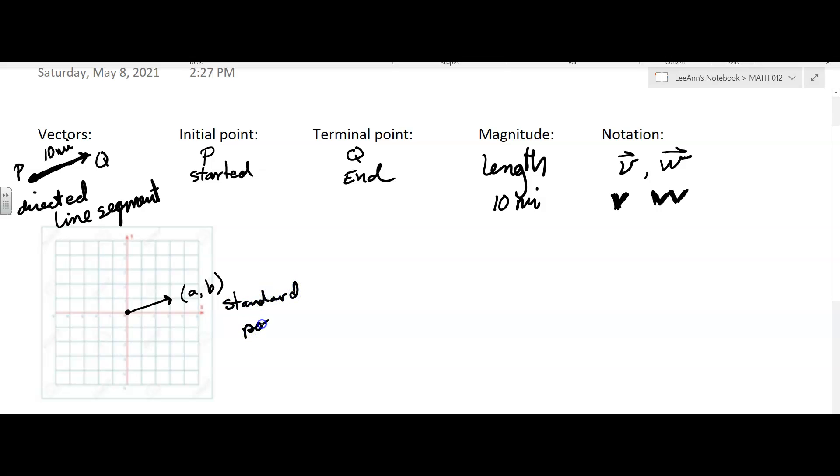So if the initial point is (0, 0), you can think of it that way. Initial point is (0, 0).